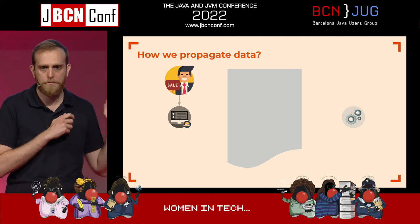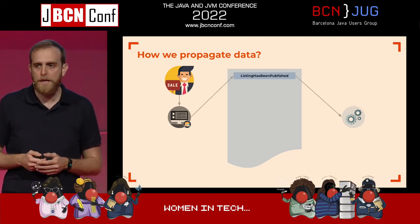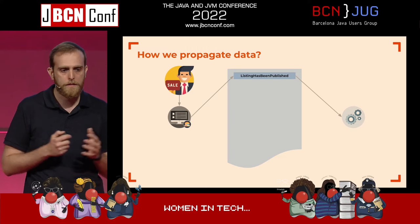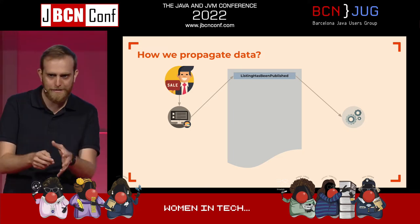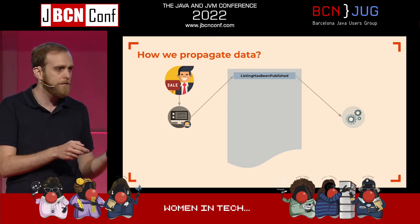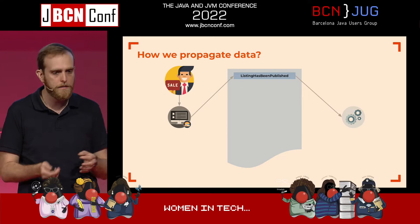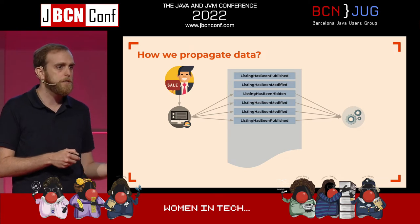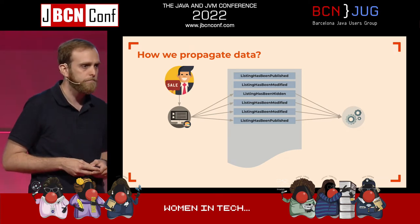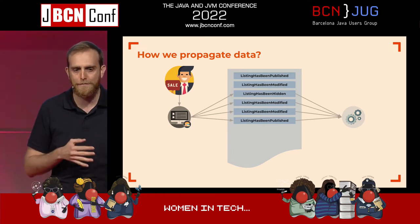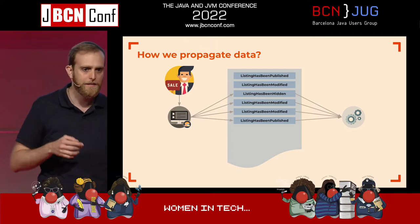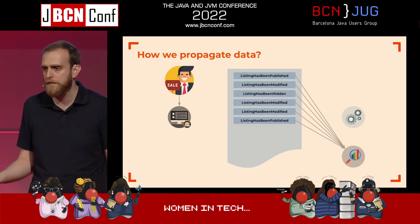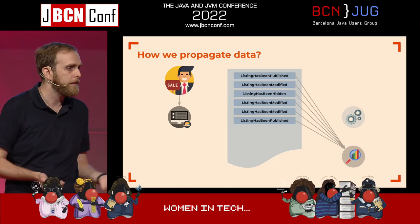How we did it: the professional does something on the back office, and the action gets logged into this event log as domain events. So the listings themselves are not written to this log — what is written is what happens to the listing: a listing has been published, modified, hidden, or whatever. The listing system reads these events to do whatever is necessary. Being an event log and not a queue also means that, for instance, analytics could read these events independently.